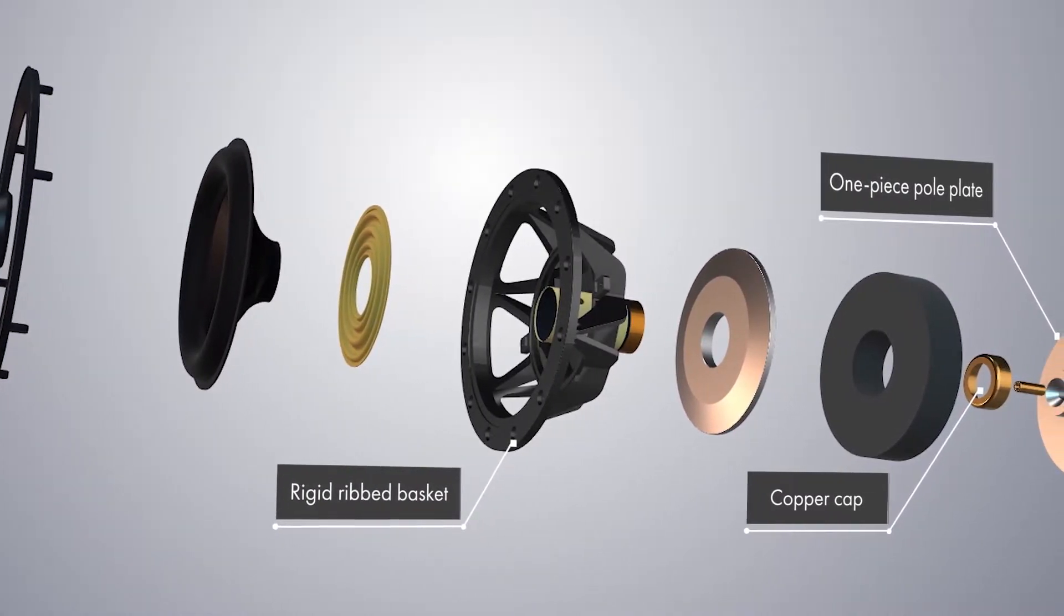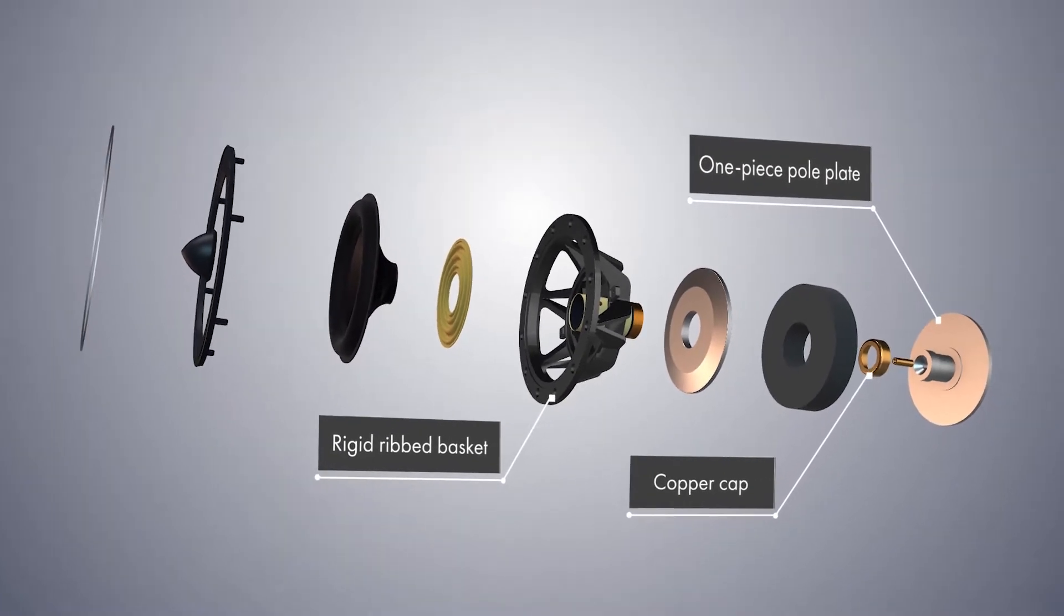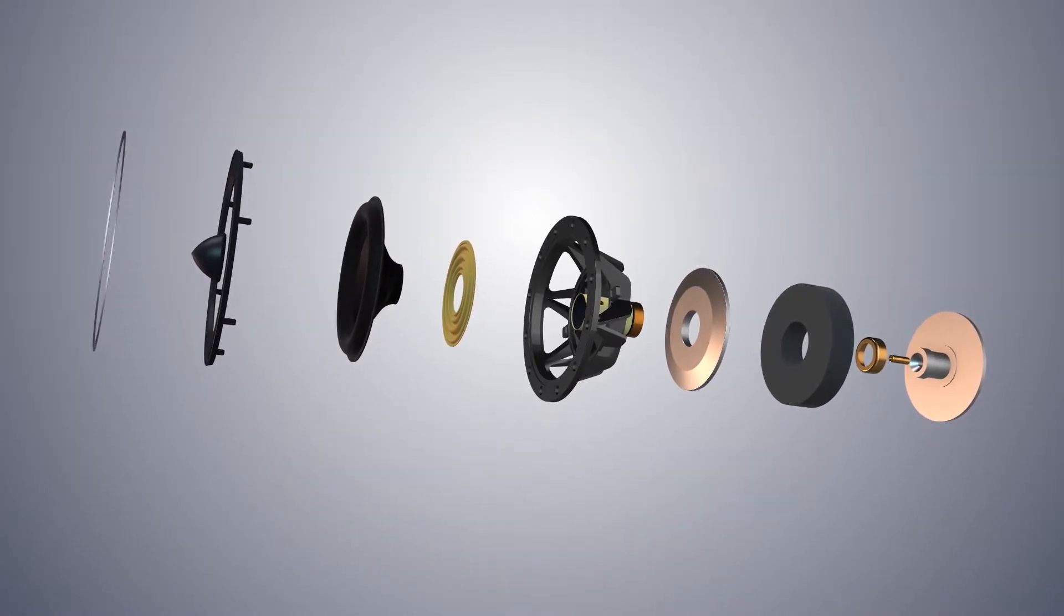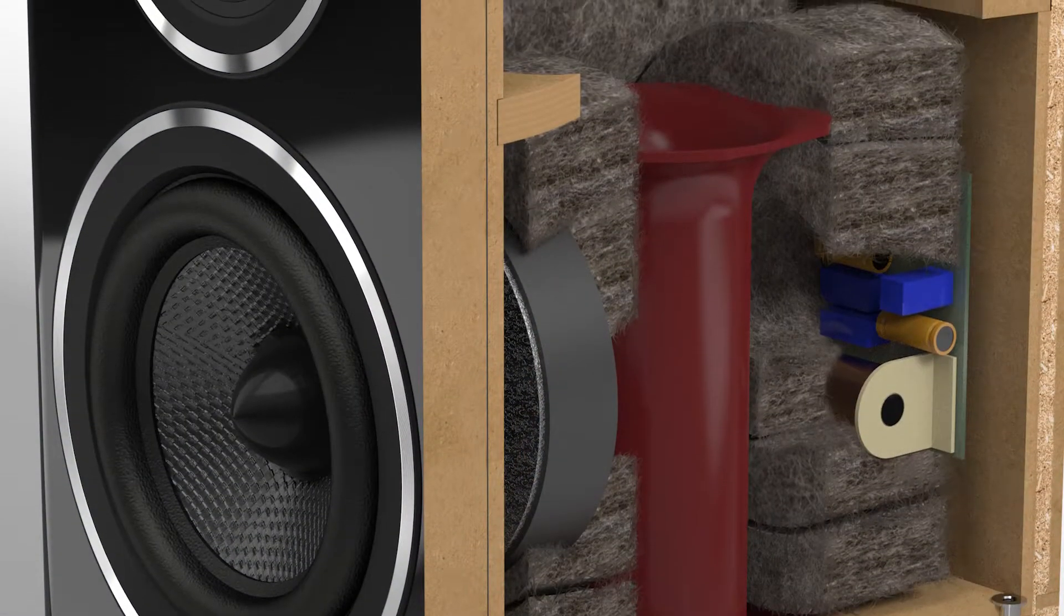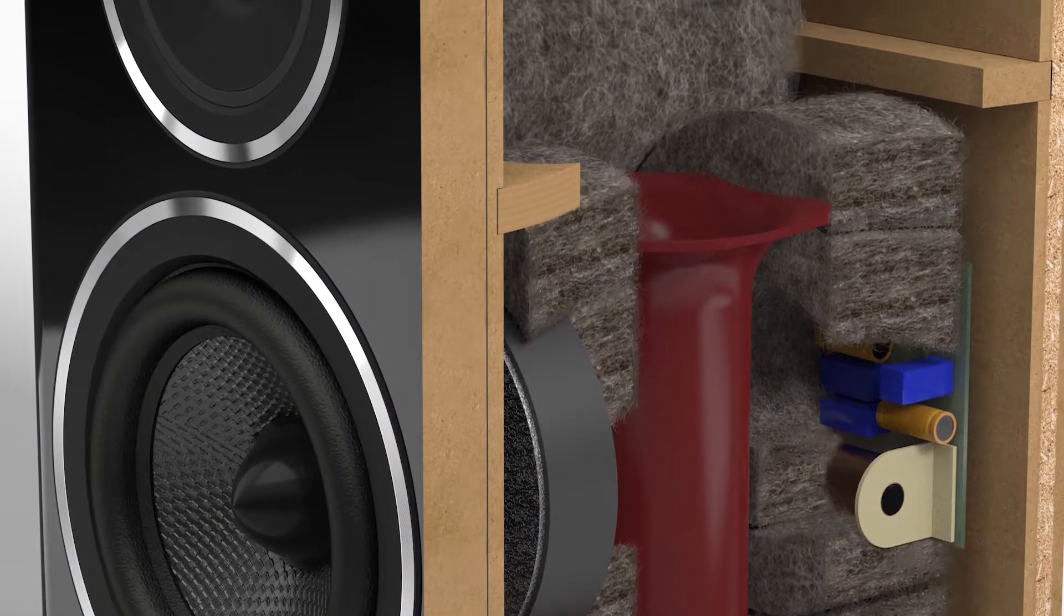The rigidity improves transient impact, while the big open area reduces early reflections back through the cone and allows the generous specially chosen internal cabinet absorbent to do its work.